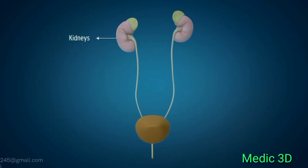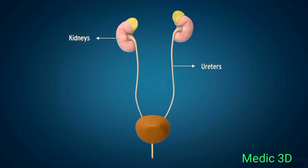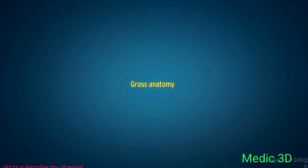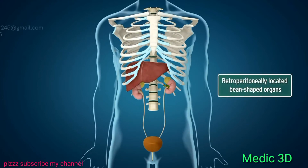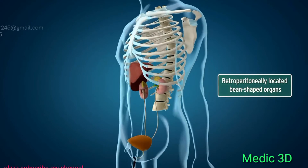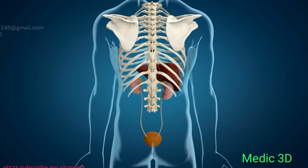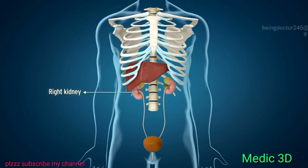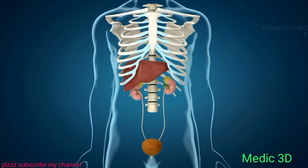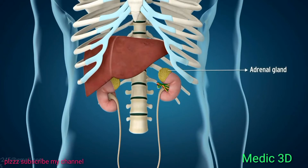Kidneys are the primary organs of the urinary system, which also includes ureters, urinary bladder, and urethra. Kidneys are a pair of retroperitoneally located bean-shaped organs just below the rib cage in the posterior part of the abdomen, one on each side of the spine. The right kidney is located slightly lower because of the liver on the right side. On the superior poles, adrenal glands are present on each kidney.